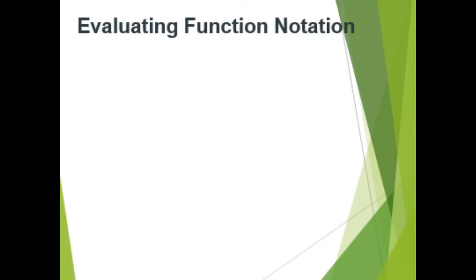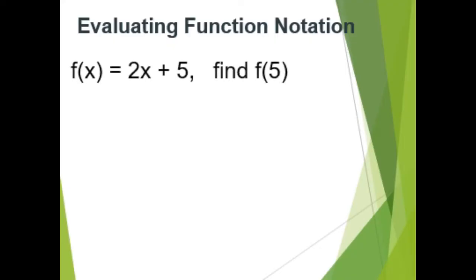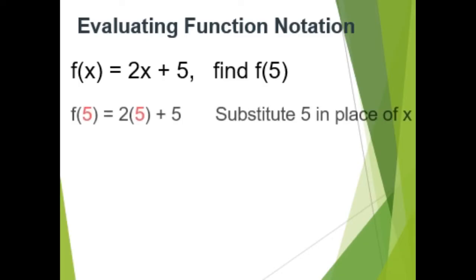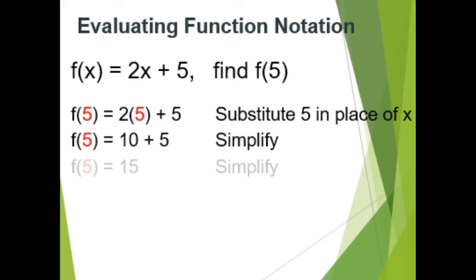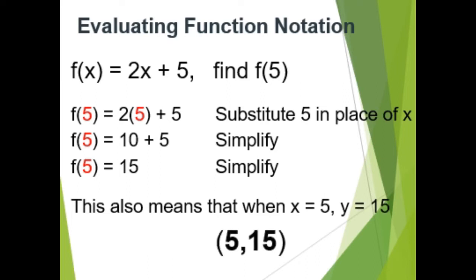Let's evaluate function notation. f of x equals 2x plus 5. Find f of 5. The value of x is 5, so let's substitute 5 in place of x. f of 5 equals 2 times 5 plus 5. Simplifying: f of 5 equals 10 plus 5, which equals 15. So this also means that when x is 5, then y is 15.